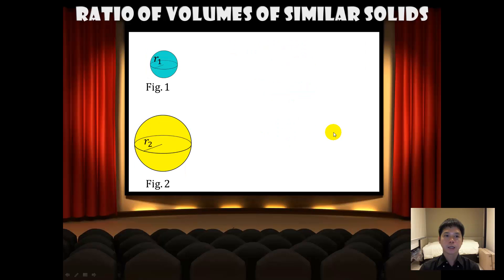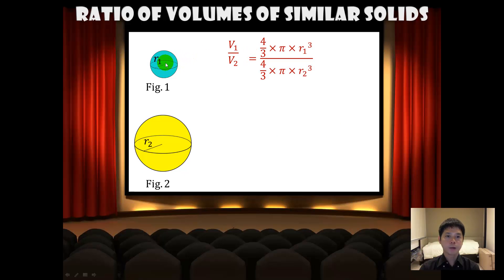Now let us look at the example of two similar spheres. V1 over V2 will be equal to (4/3)π r1³ over (4/3)π r2³. Cancelling out the common terms, we will have V1 over V2 equals (r1 over r2) cubed.